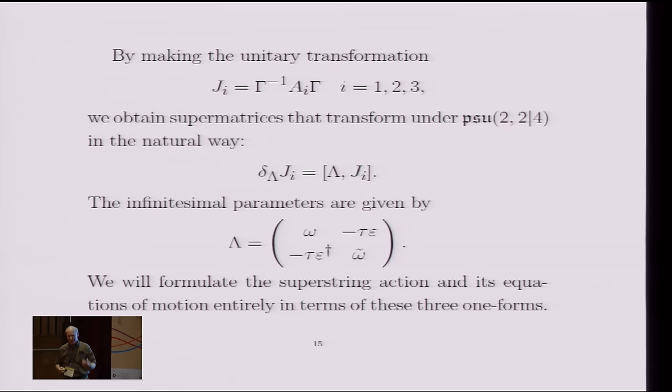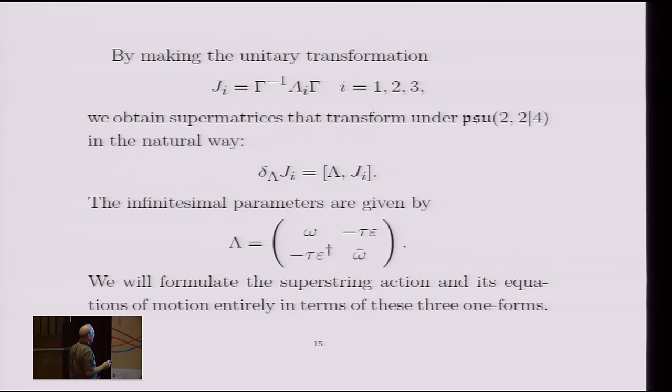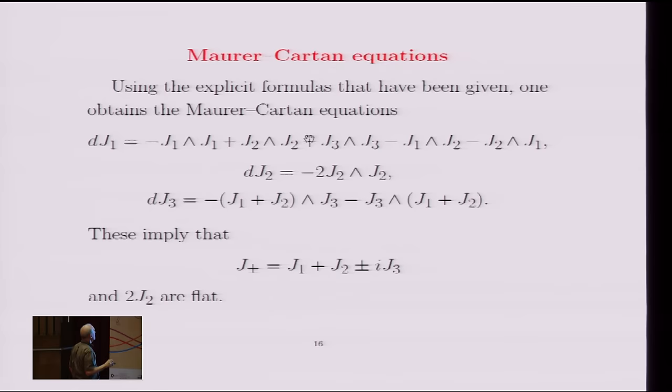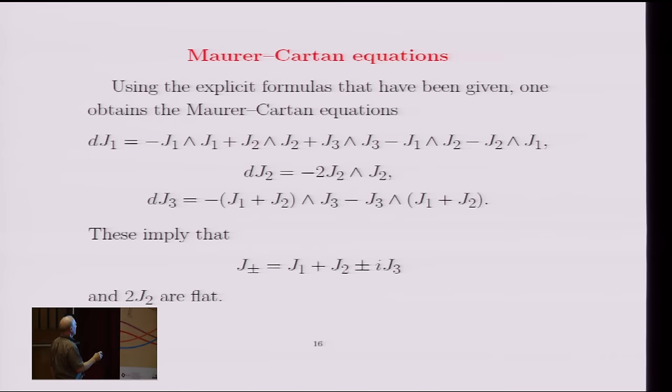The formulas for these things are completely explicit. You can construct what you might call Maurer-Cartan equations by taking exterior derivatives of each of them. You get some complicated looking formulas, although they can be recombined just by saying that these two complex combinations give you flat connections, and J2 wedge J3 is a flat connection. So that's one way of mnemonic for remembering these more complicated formulas.